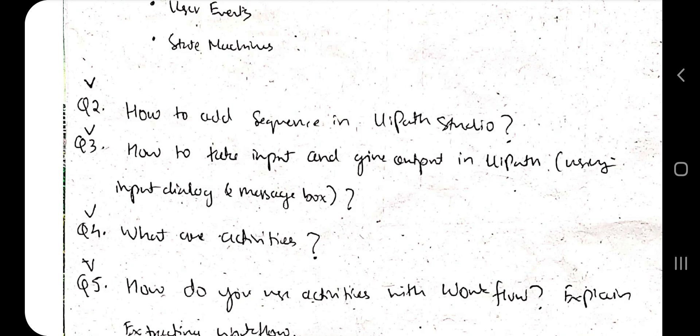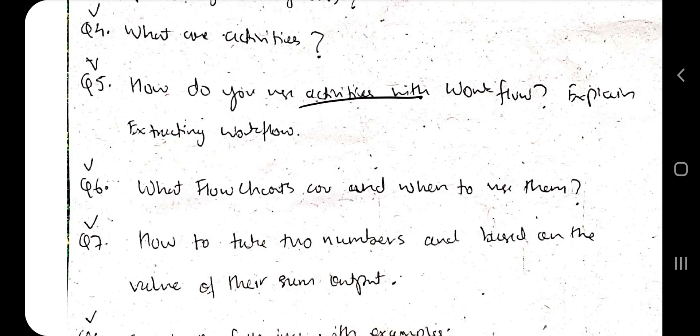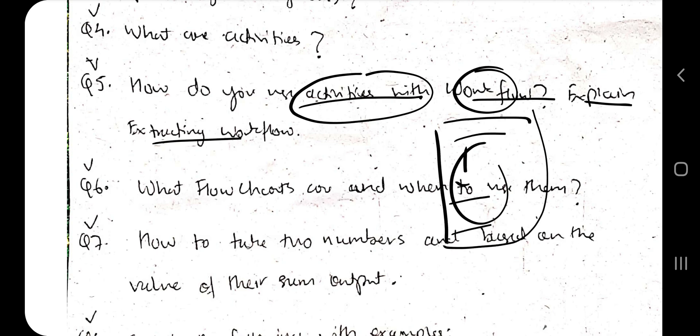What are activities? Activities are nothing but any task we need to perform - the data structure and functions are present in those particular activities. How do you use activities with workflow? Explain extracting workflow. Workflow is nothing but a sequence. When you have written a sequence and perform some activities in that, extracting workflow means if you extract this as a workflow, only this part of the code can be separately executed.